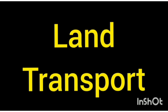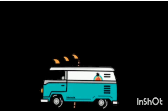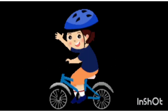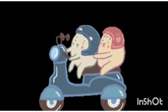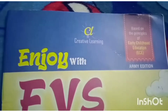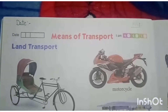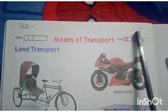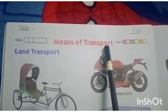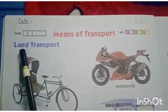Let's talk about land transport. This is the most common means of transport. Now, come to your EVS reader book, open it at page number 38, and write down the date and practice work. Our today's topic is means of transport, and our first type is land transport.